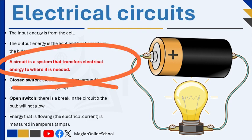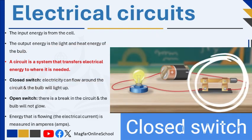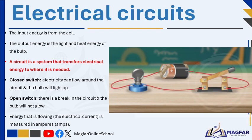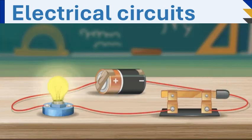A circuit is made up of different parts: the cell, conducting wires, a bulb, and sometimes a switch. When the switch is closed, electricity can flow around the circuit and the bulb will light up. If the switch is open, there is a break in the circuit and the globe will not glow. Energy that is flowing — the electrical current — is measured in amperes, or amps.